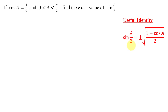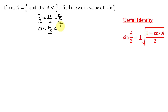That all depends on the quadrant of angle A over 2. We know angle A lies between 0 and pi over 2. So if I take this inequality and divide each part by 2, I get 0 is less than A over 2 is less than pi over 4. To divide a fraction by a whole number, you multiply by its reciprocal — the reciprocal of 2 over 1 is 1 half — giving pi times 1 half, which is pi over 4.